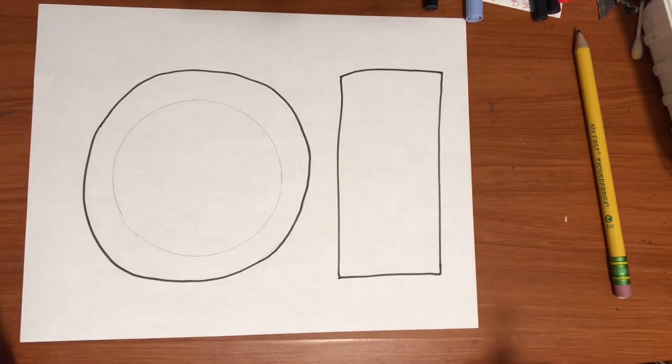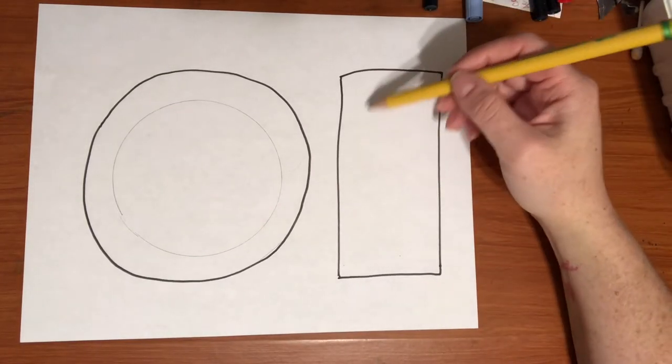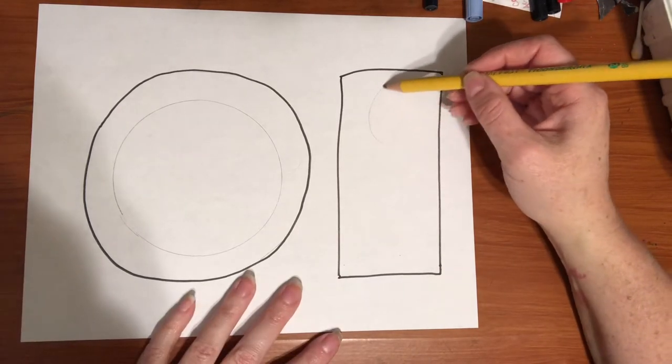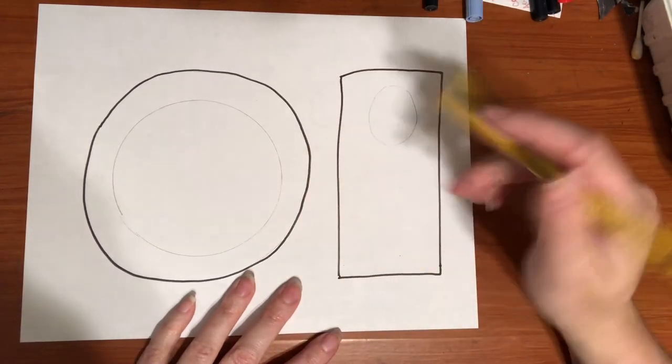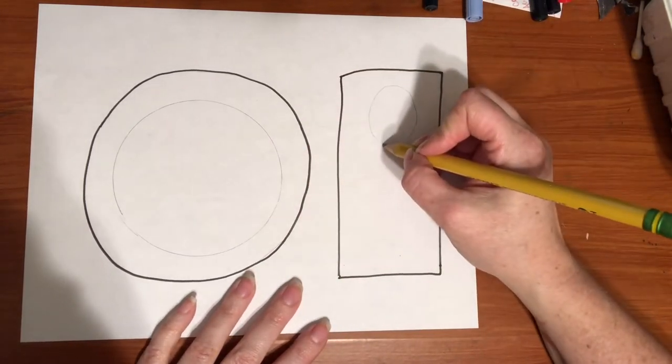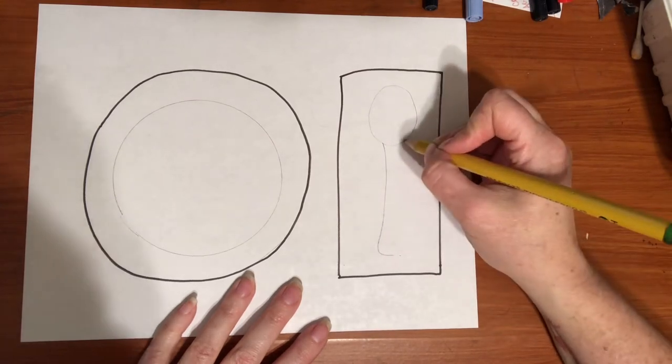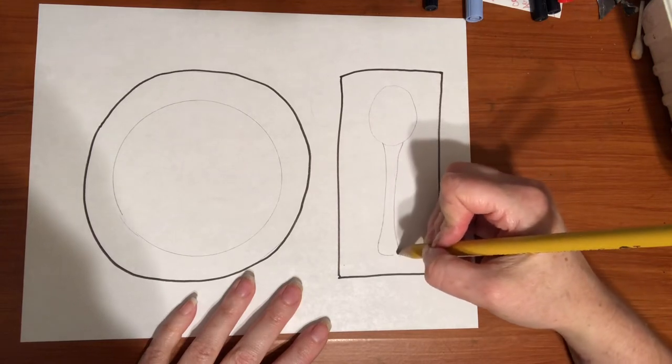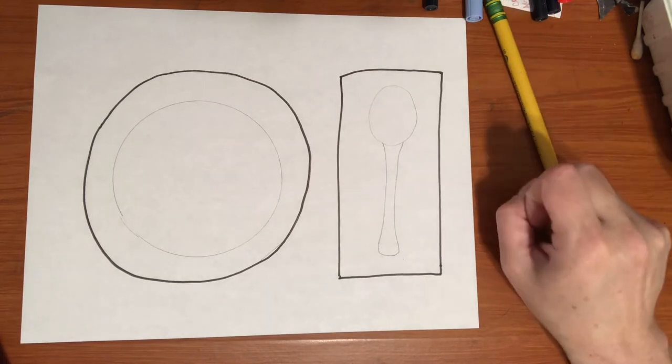The next part of making our alphabet soup is drawing our spoon. A spoon is gonna have an oval shape here, so we're gonna draw an oval. There's your oval and then you're gonna have it come down, and I like it when they get bigger at the bottom. And then on this side it's gonna come down and get bigger at the bottom. And now we have a spoon to eat the soup with.